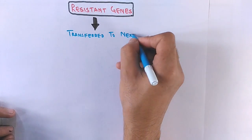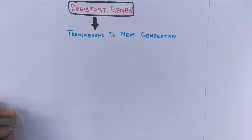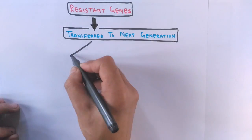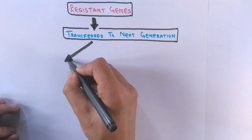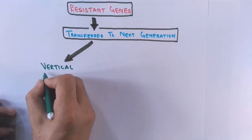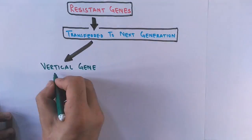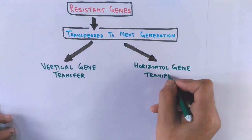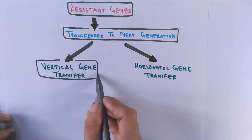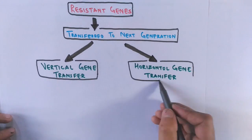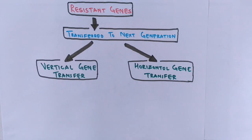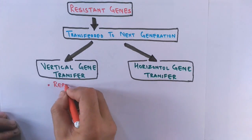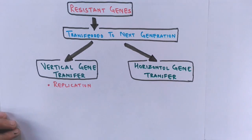Now let's see how these resistant genes get transferred to the next generation. Bacteria which have resistant genes transfer these genes via two methods: the first is vertical gene transfer, and the other is horizontal gene transfer. In vertical gene transfer, it is done by a replication process — that is, when bacteria divides into two.